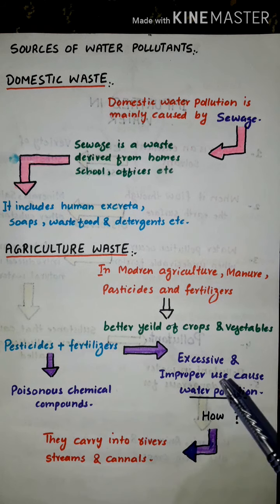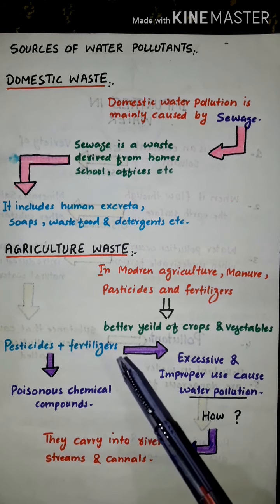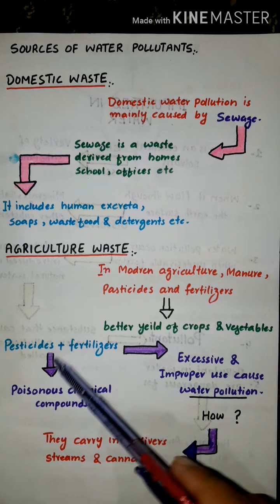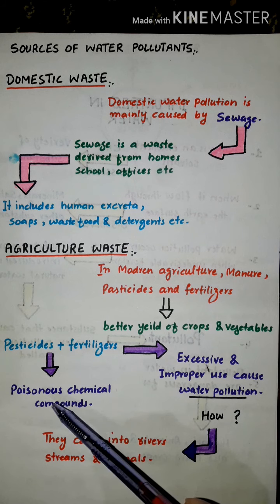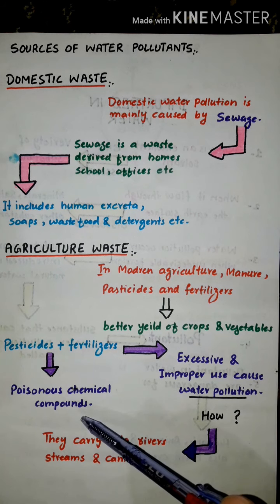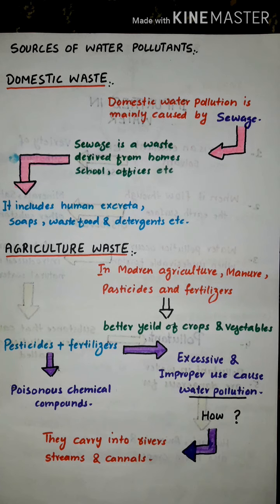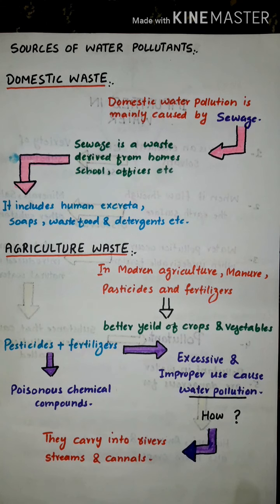Excessive and improper use of pesticides and fertilizers causes water pollution. They are carried into rivers, streams, and canals by rainwater. Pesticides and fertilizers contain poisonous chemical compounds.